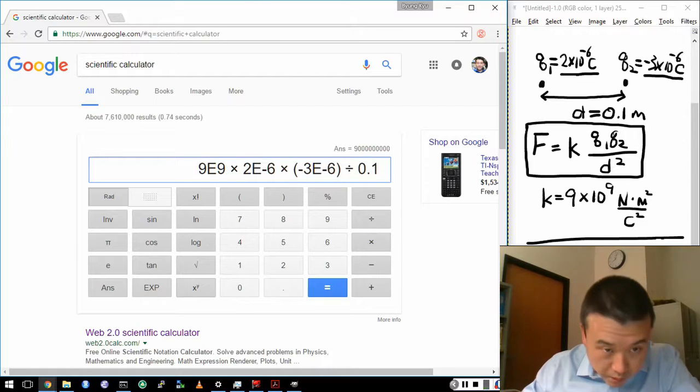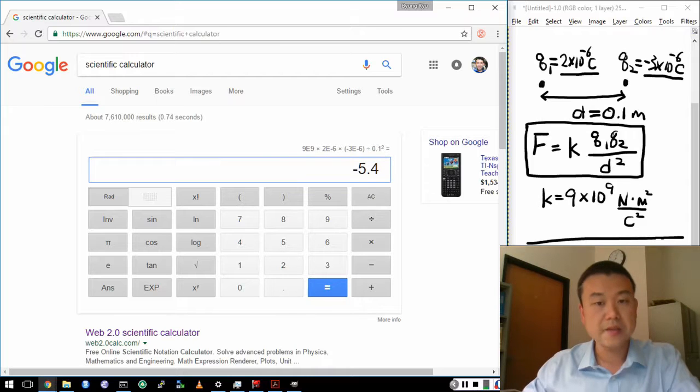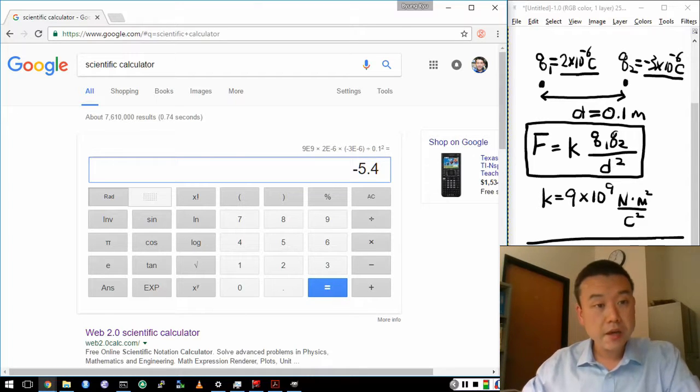Divided by 0.1 meters squared. Where's my square? If there's a square symbol, you can use it. Here I see the x raised to the power of y symbol. So I'll use this one. So 0.1 raised to the power of 2. Alright. So I entered everything. And when I press equals, it calculates my answer. Minus 5.4. That sounds about right. Yeah. So this is how you calculate it.